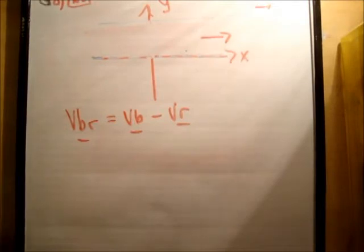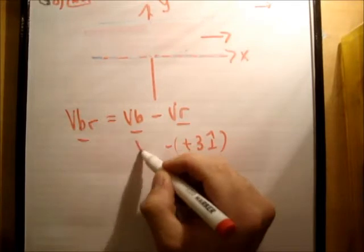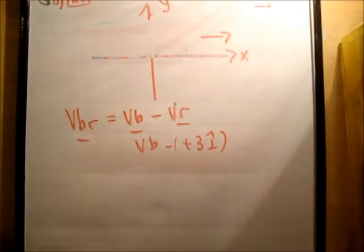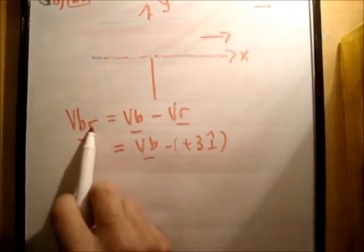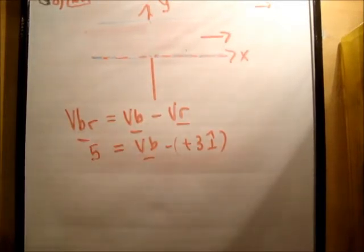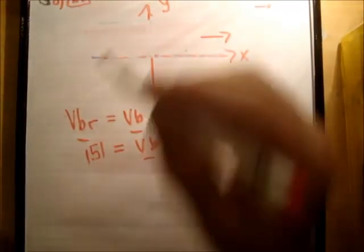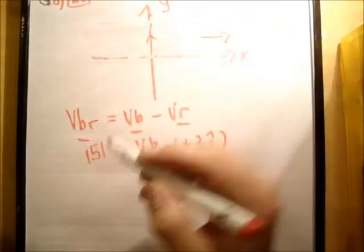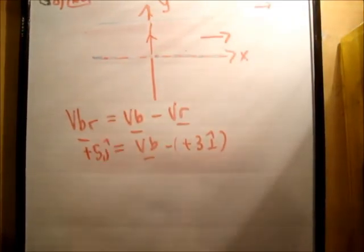We know that the velocity of the river is plus 3 i hat. We don't know the velocity of the boat, and we know the velocity of the boat relative to the river is 5 meters per second, because the river would be stationary and we would get 5. Now where are we going to go? It's magnitude of 5 units. So to go the shortest route I'm going to head straight across. So this is going to be plus 5 j hat. That's the shortest route.